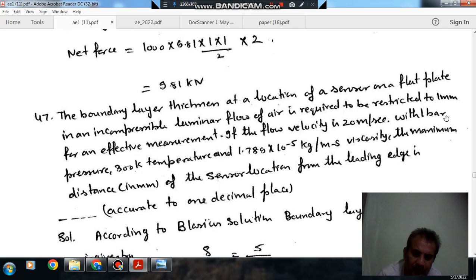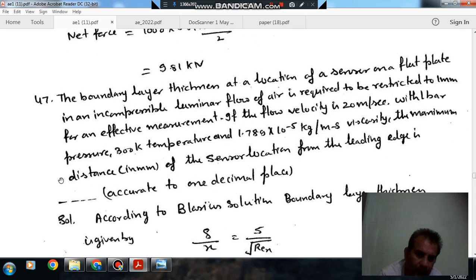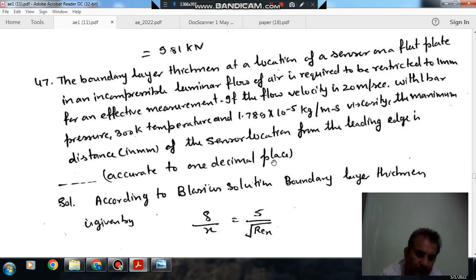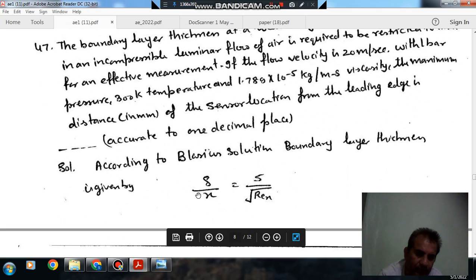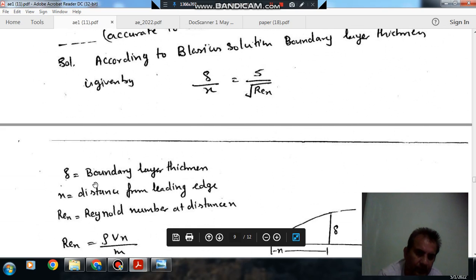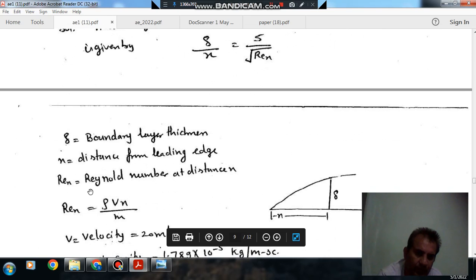If the flow velocity is 20 meter per second with 1 bar pressure, 300 Kelvin temperature, and 1.789 times 10^-5 kilogram per meter per second viscosity, the maximum distance in mm of the sensor location from the leading edge is accurate to one decimal place. According to Blasius solution, we have delta by x equals 5 by root Rex, and delta is your boundary thickness and x is distance from the leading edge.